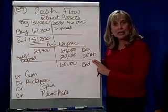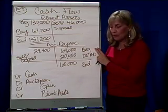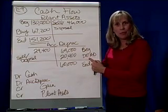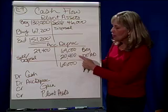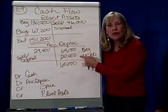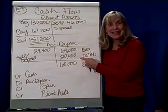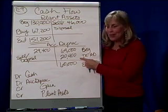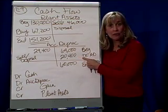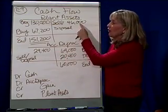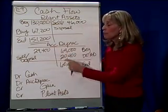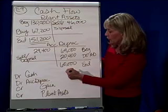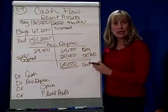The accumulated depreciation account started the year with $69,000. We made a depreciation expense entry — debit depreciation expense, credit accumulated depreciation — for $20,400. Where does this number show up on the cash flow statement? It shows up in the operating section as an add-back to net income. So that's already up there on our statement of cash flows under operations. The disposed asset had accumulated depreciation of $29,400.